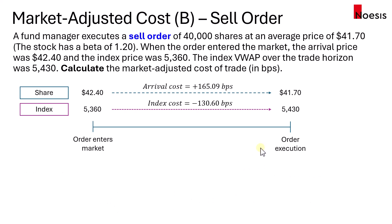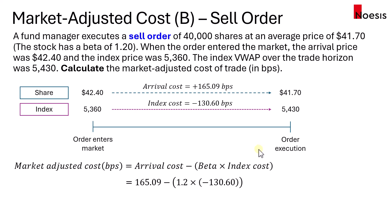If we calculate the market adjusted cost: the arrival cost of 165.09 minus 1.2 (the stock beta) times negative 130.6. The second term becomes positive 156.72, which means if we take out the effect of the market movement on the stock, the arrival cost would have been higher by 156.72 basis points. After adjustment, this becomes 321.81 basis points. So if the market had not gone up — if we remove that portion — the trader would have performed even worse, with a much higher arrival cost after adjusting for the market factor.